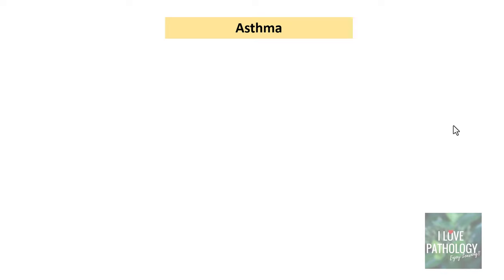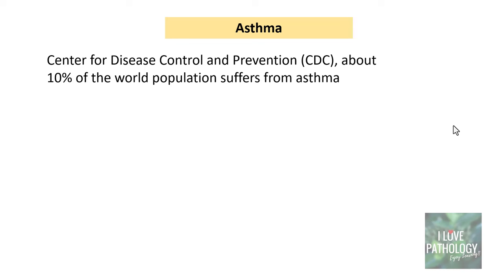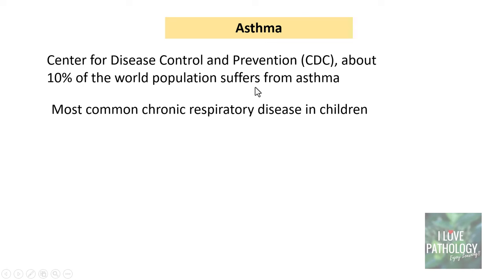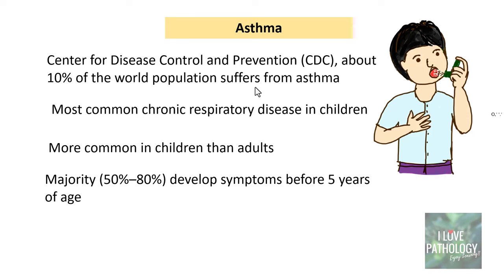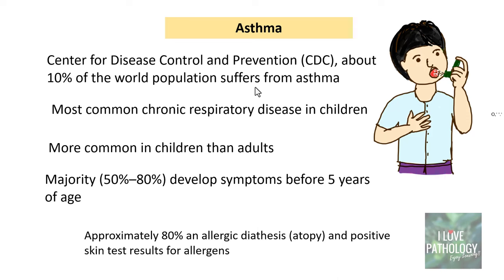Coming to the epidemiological aspects of asthma, the Centers for Disease Control and Prevention (CDC) tells us that around 10% of the world's population suffers from asthma. It is the most common chronic respiratory disease in children — more common in children than adults — and the majority, around 50 to 80% of them, develop symptoms before 5 years of age. Approximately 80% of these patients have allergic diathesis and a positive skin test for allergens, meaning atopy or allergy plays a very important role in the development of asthma.